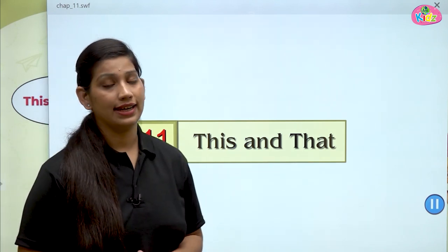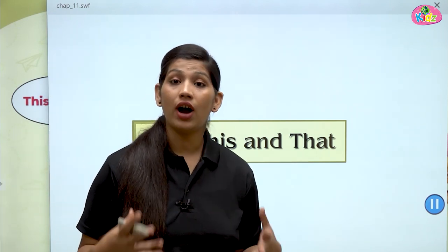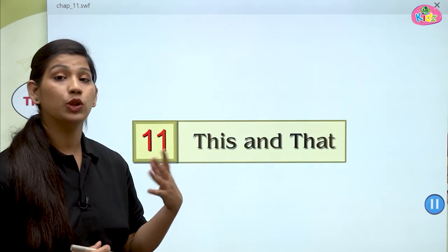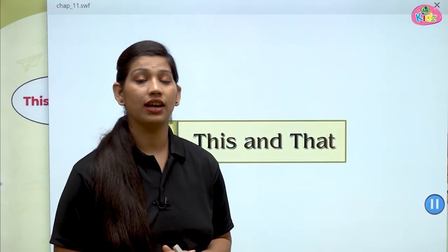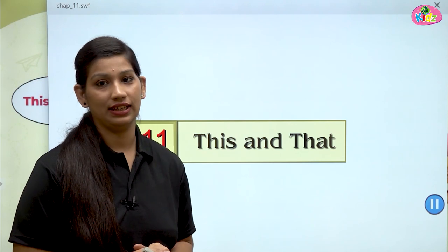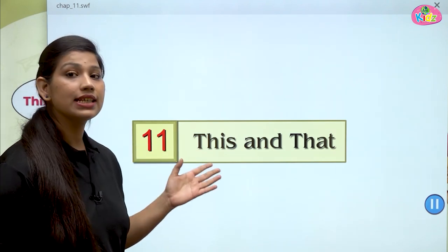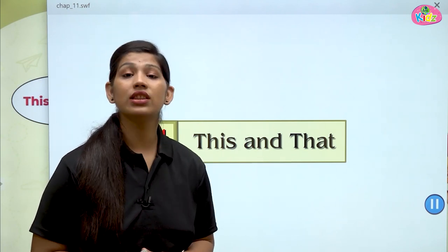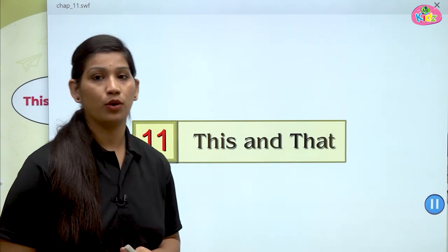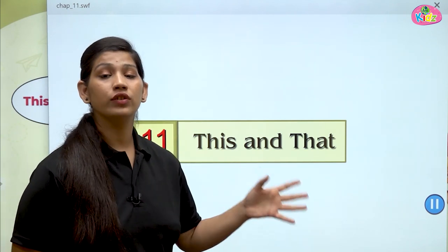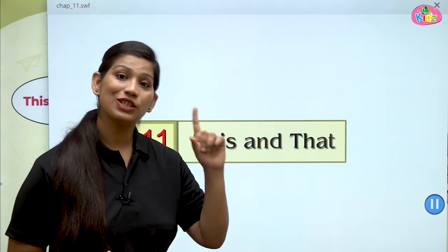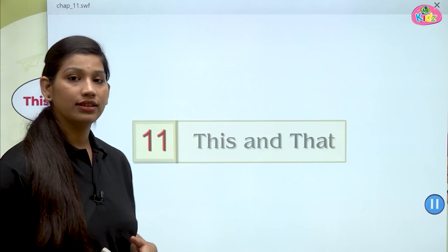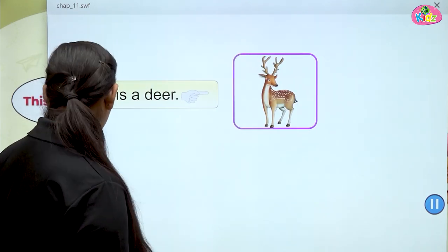Now comes that. Anything which is far away from us — koi bhi cheez joh humse door hai, usko denote karne ke liye, ham that ka use karenge. This is used with near objects. That is used with far objects. In both uses, object is only one. Koi bhi object jab one hi number hota hai, tab ham this or that ka use karte hai.